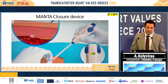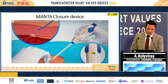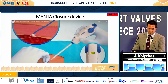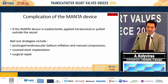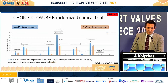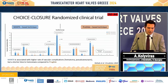There is a tool that we advance to lock the collagen in the outer wall of the vessel. If Manta fails, bailout strategies include balloon inflation, manual compression, covered stent, and surgical repair. Choice closure studies showed that Manta was associated with a higher rate of vascular complications such as hematoma and pseudoaneurysm, but had shorter time to hemostasis compared to ProGlide. ProGlide had many device failures.